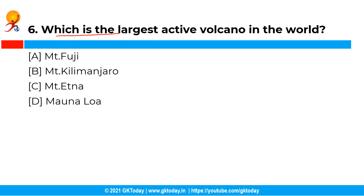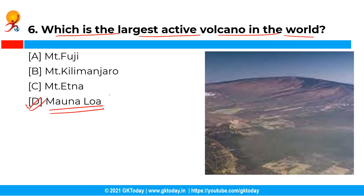The next question is: which is the largest active volcano in the world? The correct answer is option D — Mauna Loa. The world's largest active volcano is Mauna Loa in Hawaii, where famous coffee is grown in the rich volcanic rocks.